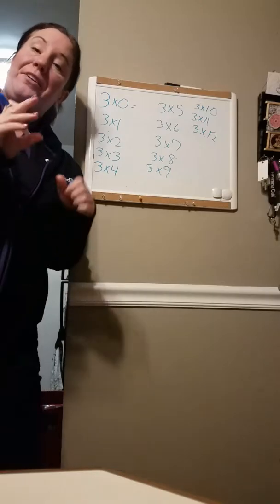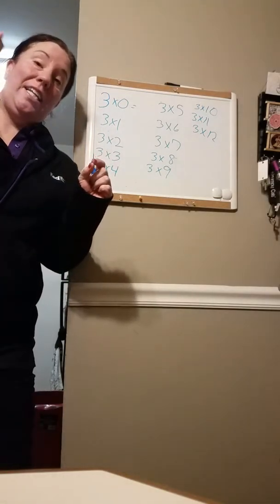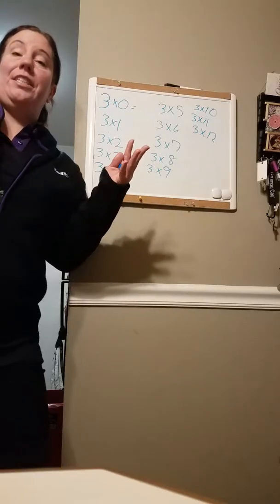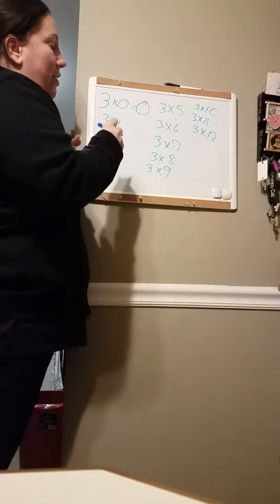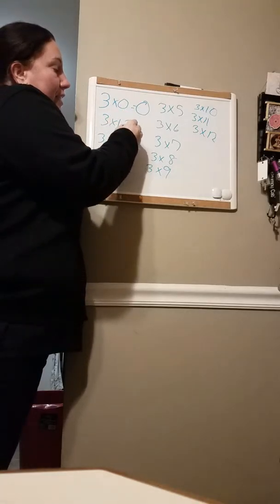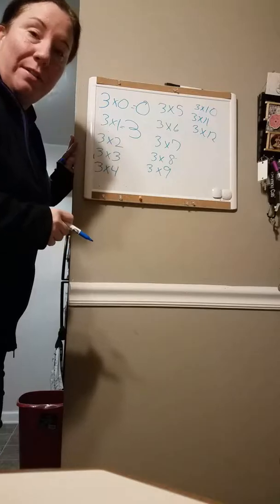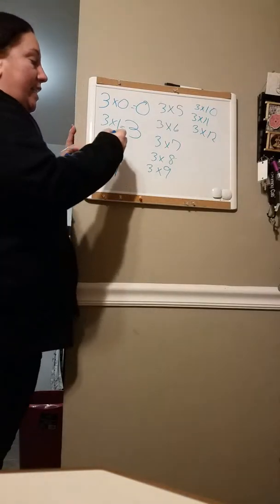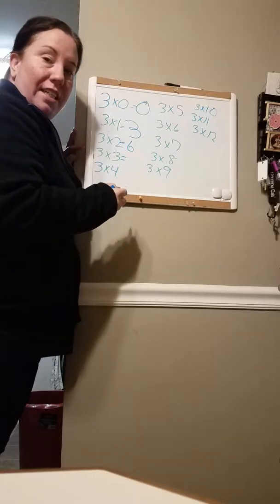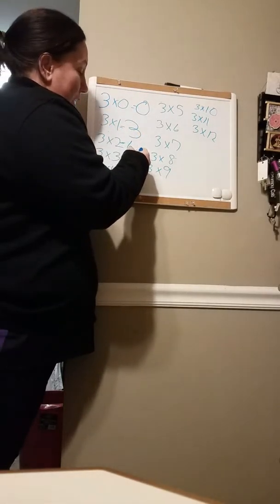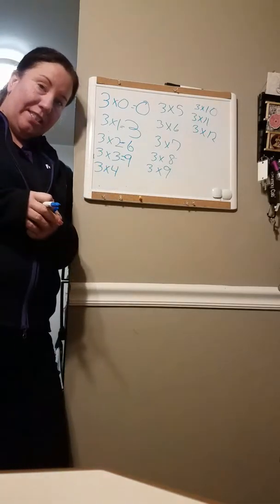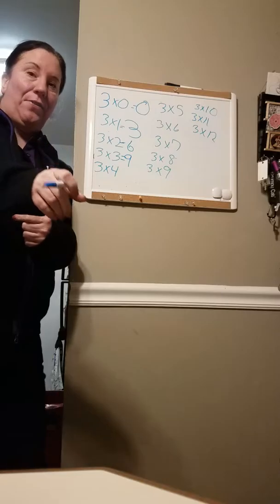So let's go over this. Three times zero — anything times zero is zero. You got it, so this is zero. Three times one is three. Three times two is six. Three times three is nine. And I know you're getting this — three times four is twelve.